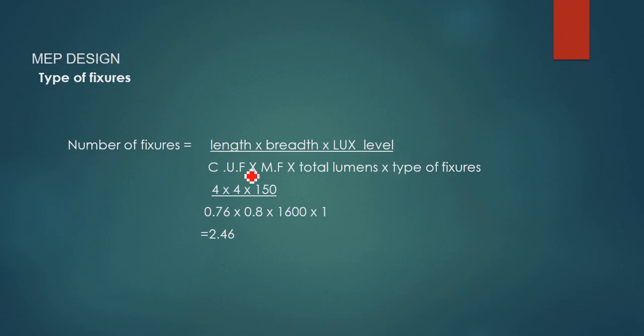Type of fixtures formula: number of fixtures equals total length into breadth into lux level divided by coefficient of utilization factor and maintenance factor and total lumens. All the values are substituted, we will get 2.46. That means we have to consider three lights in that area. Thank you, friends.